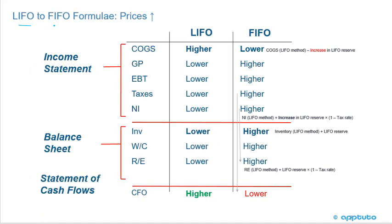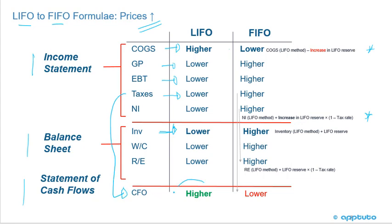Here is a chart comparing LIFO to FIFO when prices are increasing, covering the income statement, balance sheet, and cash flows. On the income statement, when prices are rising, cost of goods sold is higher under LIFO than under FIFO. If cost of goods sold is higher, inventory must be lower. Higher cost of goods sold leads to lower gross profit, lower earnings before taxes, lower taxes — which is why cash flow from operations is higher under LIFO — and lower net income. Consequently, ROA, ROE, etc. are all lower under LIFO when prices are rising.